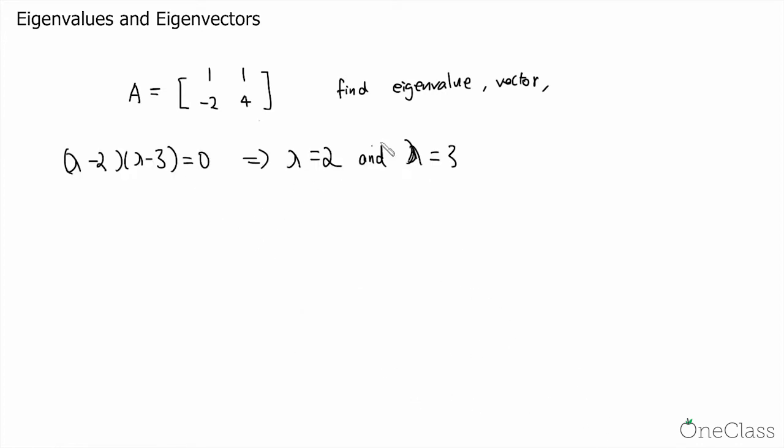And then next, we would like to find the eigenvector associated with these two eigenvalues. So, let's first consider the space for which the eigenvalue is 2. What we do here is we consider the matrix lambda I2 minus A, which is equal to lambda minus 1, minus 1, 2, lambda minus 4.